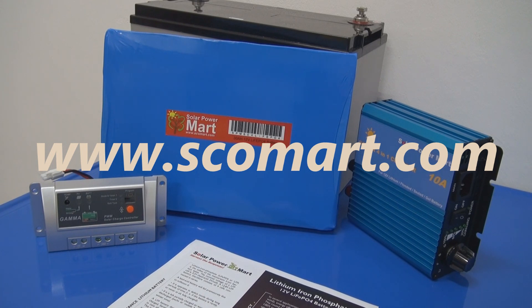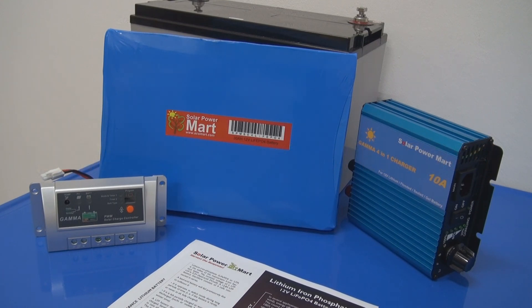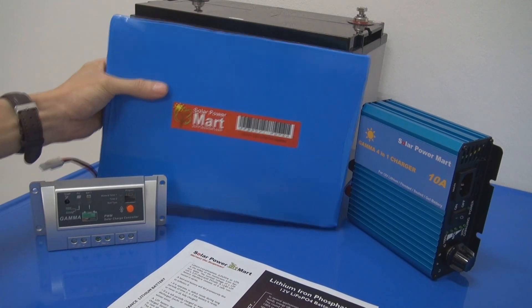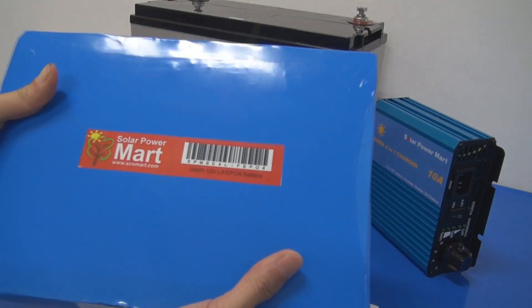We have the smallest one, it's 4 AH. Then we have 8 AH, 16 AH, and 30 AH. And even we have 100 AH. But today, this is with me. It's basically the 30 AH.